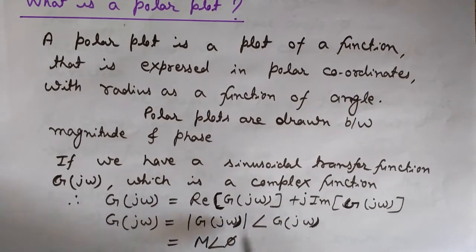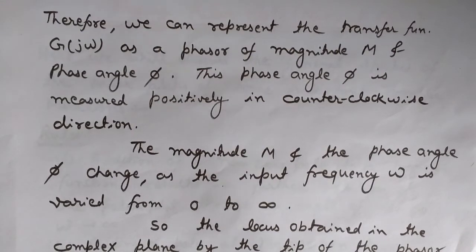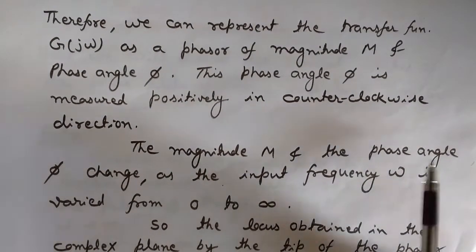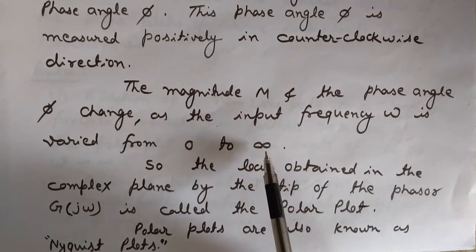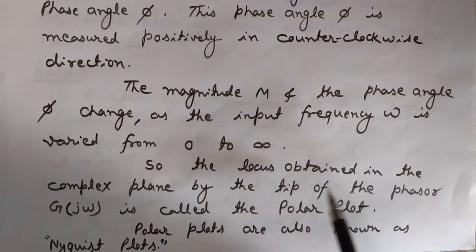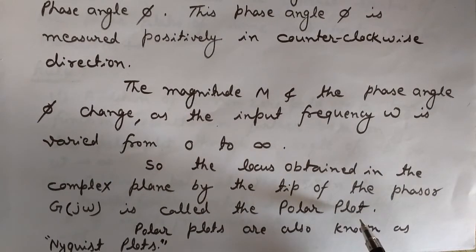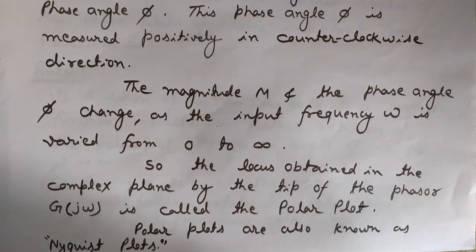G(jω) can be represented with its magnitude M and phase angle φ. One important thing: this phase angle φ is measured positively in the counterclockwise (anticlockwise) direction. As we vary the frequency ω from 0 to infinity, the magnitude M and phase angle φ change. The locus obtained in the complex plane by the tip of the phasor G(jω) is known as the polar plot. We also call these polar plots Nyquist plots.